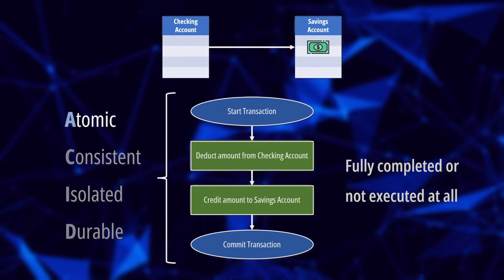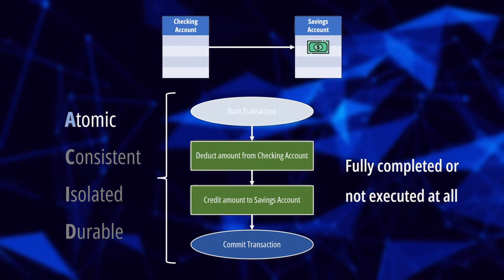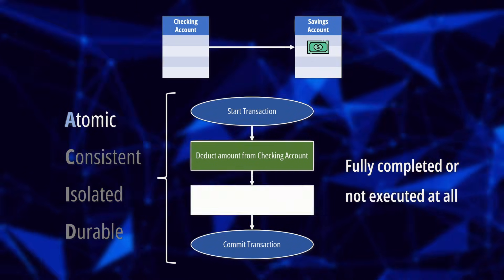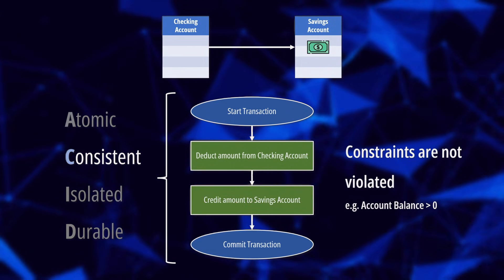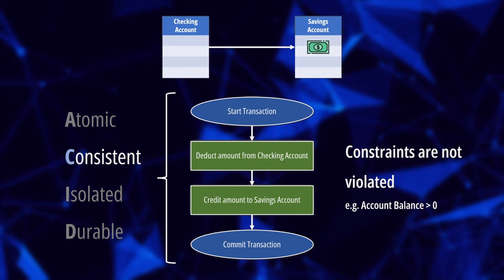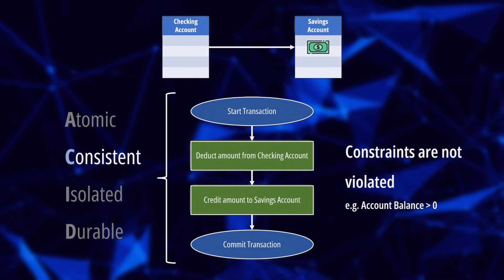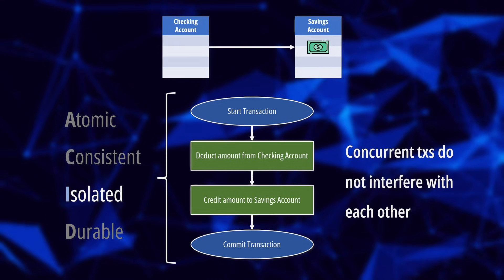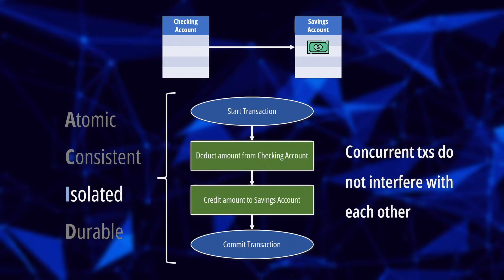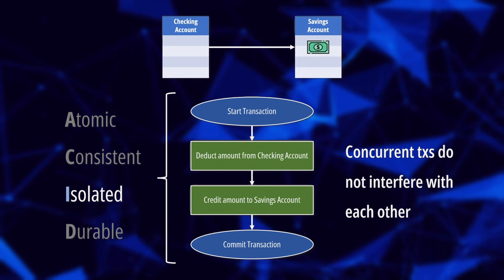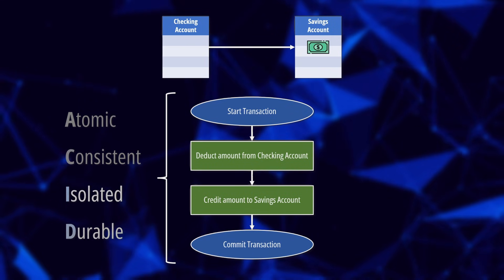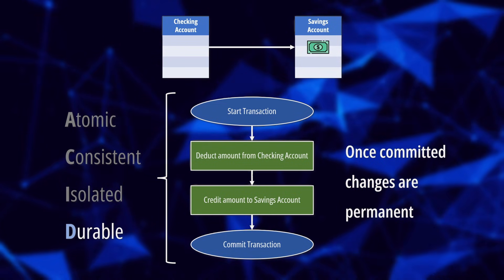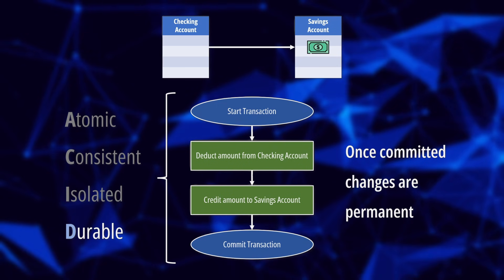Atomicity ensures that a transaction is treated as a single unit of work, either fully completed or not at all. If any part of the transaction fails, the entire transaction is rolled back to its previous state. Consistency ensures the database remains in a valid state after a transaction, meaning any constraints or rules are not violated. Isolation ensures concurrent transactions do not interfere with each other. Durability ensures that once a transaction is committed, its changes are permanent and will survive failures such as power outages or system crashes.